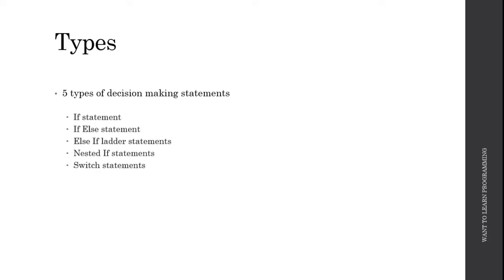The types of decision making statements are 5 in number: if statement, if else statement, else if ladder statements, nested if statements, and the switch statement. First let's look at if statement in this video.